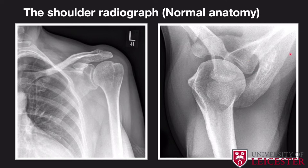On your AP view, the humeral head forms a very subtle overlap with the glenoid — that's a well-centered AP radiograph. There are specific other views that can be obtained; for example, you can get it specifically orientated so the anterior and posterior lips of the glenoid are perfectly aligned. We call this the Grashey view, which may be specifically looking for degenerative change or abnormalities within the glenoid.